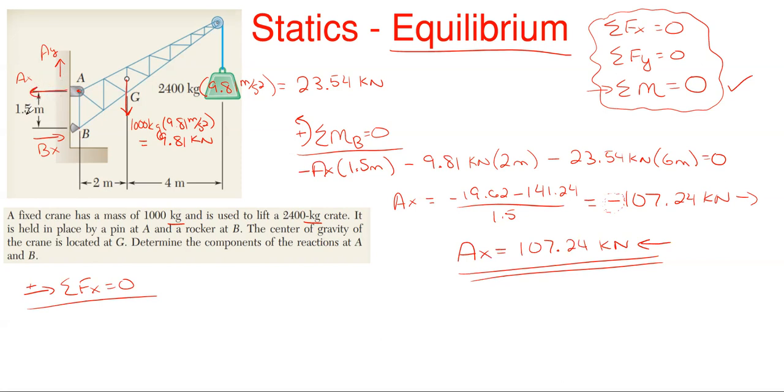We only have two forces in our x direction. We have Ax which is going to the left and we have a value for it of 107.24, and Bx is the only other force in the horizontal direction. So we have Bx to the right, so it's positive, minus the 107.24 because it is acting left equal to zero. Well, Bx has to be equal to Ax in value just in the opposite direction, which is to the right.